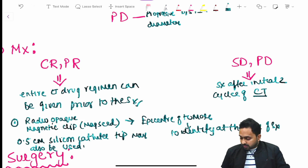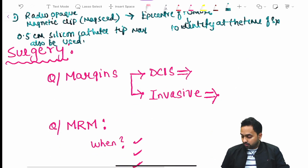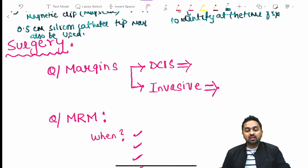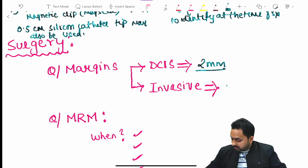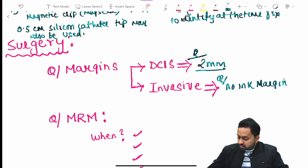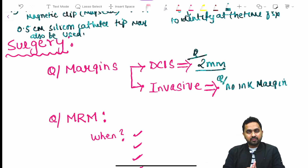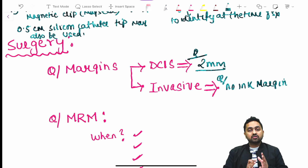Regarding surgery and margins: in DCIS, the required margin is 2 mm. In invasive carcinoma, it is a no-ink margin. These are the current standards as mentioned in the recent edition of Bailey and Love. The first surgery discussed is modified radical mastectomy (MRM), which includes axillary dissection. Indications for MRM include large tumors in relation to breast size, multi-centricity, diffuse microcalcification, BRCA-positive cancer, and patient preference.